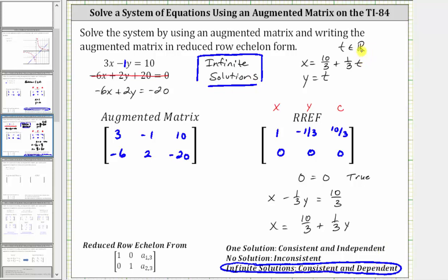We can also say that if t is all real numbers, we can express the infinite number of solutions as x equals 10-thirds plus one-third t, and y equals t.